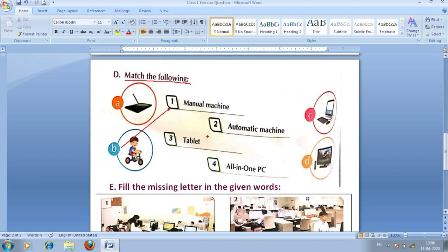And second one is automatic machine. Automatic machine babu, D hojaye ga. Yaani ke, computer mera automatic machine hai. And third one is tablet. Tablet hamara A number hojaye ga. A number hamara tablet hojaye ga. And fourth one is all in one PC. Yaani ke, yeh four number jo hai babu, yeh match karega C number se. So, is tarah se, haamne D section ko bhi cover kari diya.